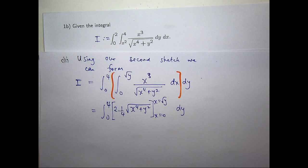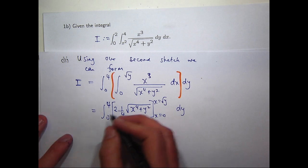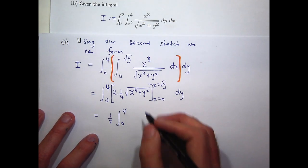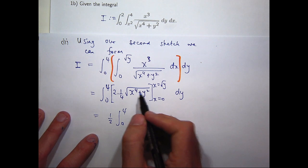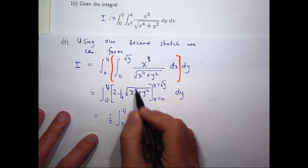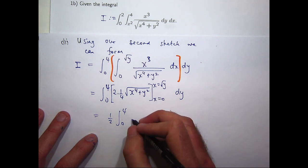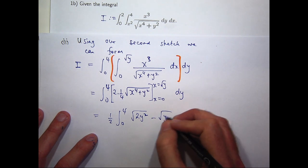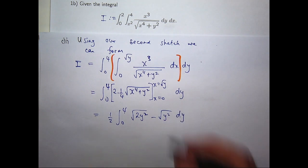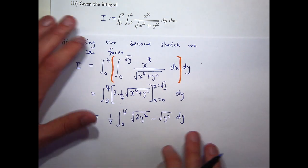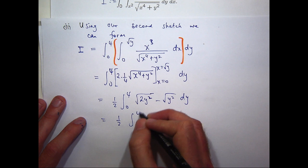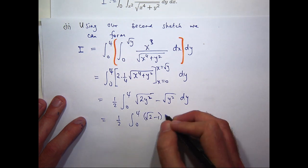So now if I substitute in x equals root y, x equals 0, I can take this sort of 1 half out the front. Then I'm going to get something like the following. Well I'm going to get a y squared there. So I'm going to get root 2y squared. And I'm going to get 0 there. So that's what I'll get. Now I can clean that up. Take the square roots. I'm going to get something like this. OK? So that's a constant.